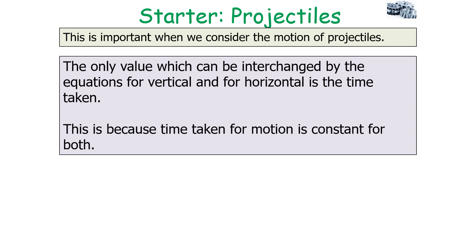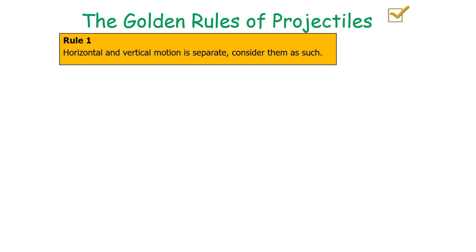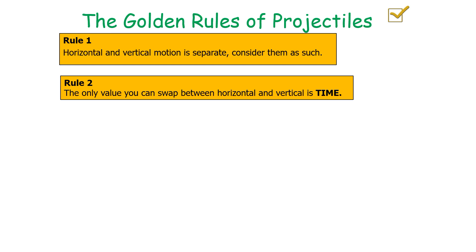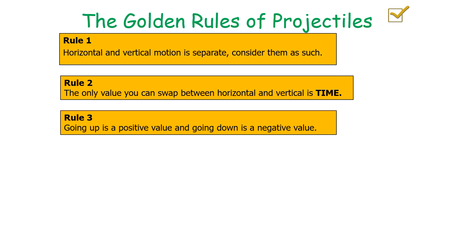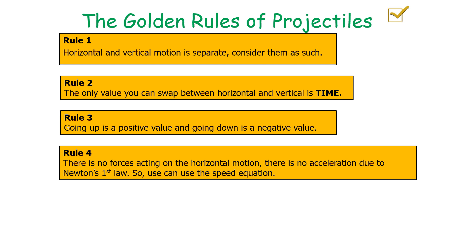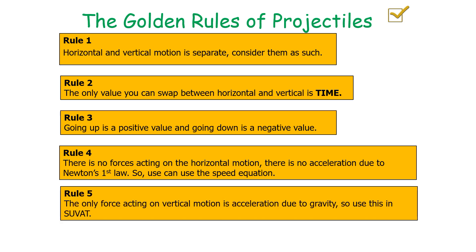Here are the rules for solving projectile problems. Rule 1: horizontal and vertical motions are separate — consider them independently. Rule 2: the only value you can swap between the horizontal and vertical motions is time. Rule 3: upward is positive and downward is negative. Rule 4: there is no force acting horizontally, so there is no horizontal acceleration; use the speed equation v = d/t. Rule 5: the only force acting vertically is acceleration due to gravity, so use SUVAT for vertical motion.